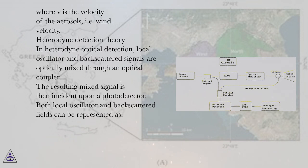Heterodyne detection theory. In heterodyne optical detection, local oscillator and backscattered signals are optically mixed through an optical coupler. The resulting mixed signal is then incident upon a photodetector.